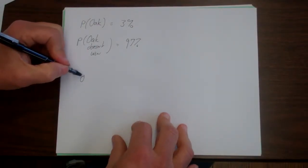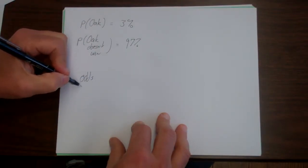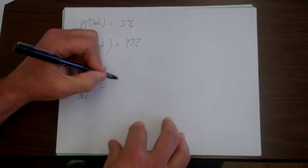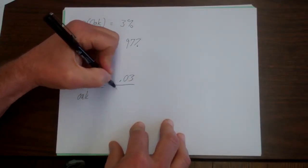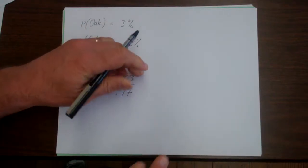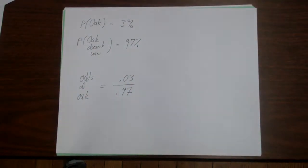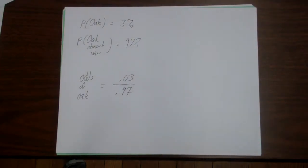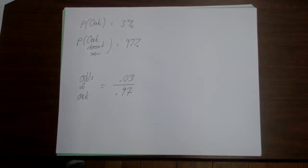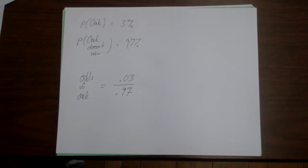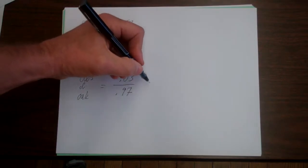And the odds of Oakland winning the Super Bowl will be 0.03 over 0.97. And I don't have a calculator with me now, but that's a pretty small number. Actually, here's a calculator, so let's use it. So you simply do here, you simply go 0.3 divided by 0.97.